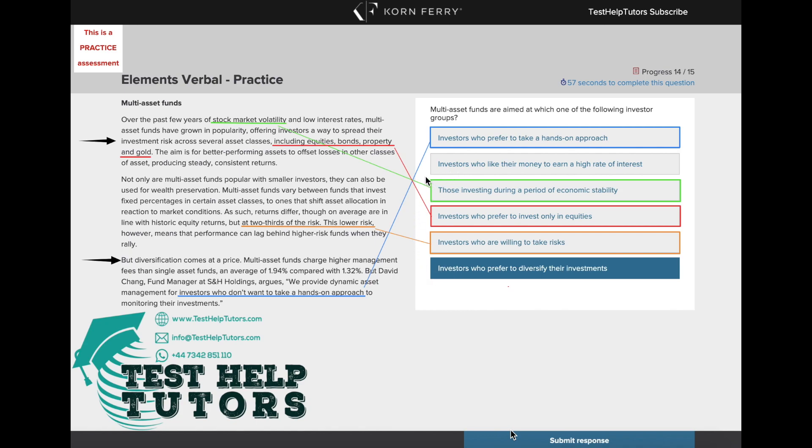So the second option states investors who like their money to earn a high rate of interest. We can't say for sure if this is the case. It probably isn't the case really when you're going through the passage because it doesn't really mention the high rate or the low rate of interest.